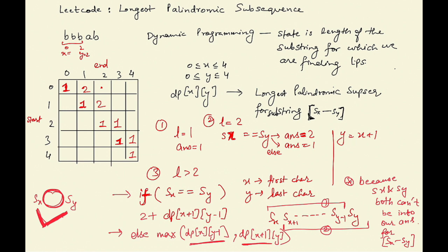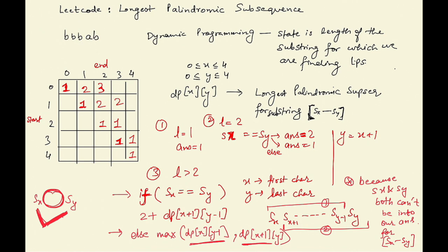Let's continue filling the table. For index 0 to 2: s[0] and s[2] are both 'b', so the answer is 2 plus dp[1][1] which is 1, giving 3. For index 1 to 3: 'b' is not equal to 'a', so we exclude one or the other and take the maximum — the answer is 2. For index 2 to 4: s[x] equals s[y], so the answer is 2 plus the result of the inner substring which is 1, giving 3.